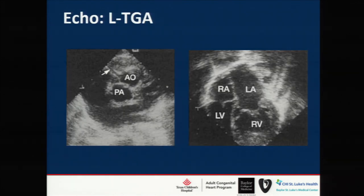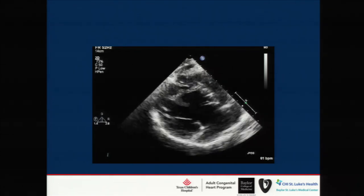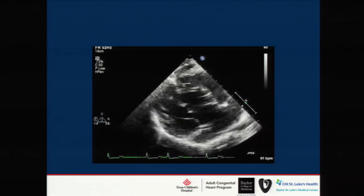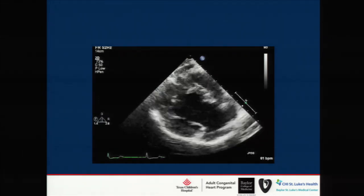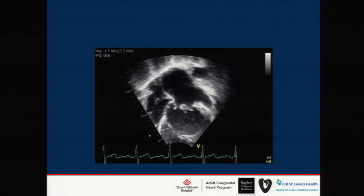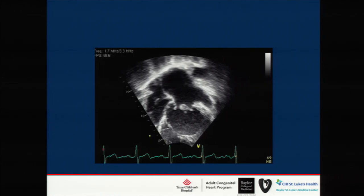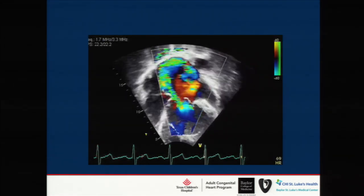On echo, on the short axis the aorta will be anterior and rightward, your left atrium is here, and your right ventricle is on the left side. In the four-chamber view you have an apically displaced tricuspid valve that looks abnormal — Ebsteinoid — and a very dilated left atrium. You can see that this valve is also very regurgitant.